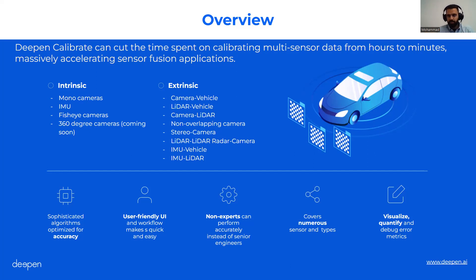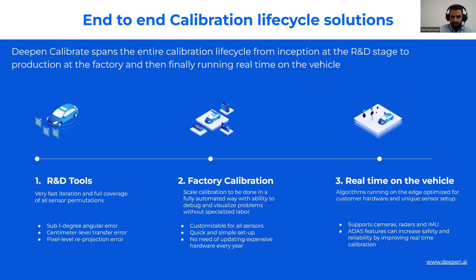We support things like camera-to-vehicle and radar-to-vehicle, and we'll get into target-based and targetless calibration. The idea is to provide a tool optimized for accuracy that can be easily used by non-experts, covering all sensor permutations with the ability to visualize and quantify error rate and accuracy — and quickly debug any issues. We solve calibration from the inception stage in R&D all the way to running real-time on the edge, including detecting if calibration is degrading or automatically correcting it in real-time.